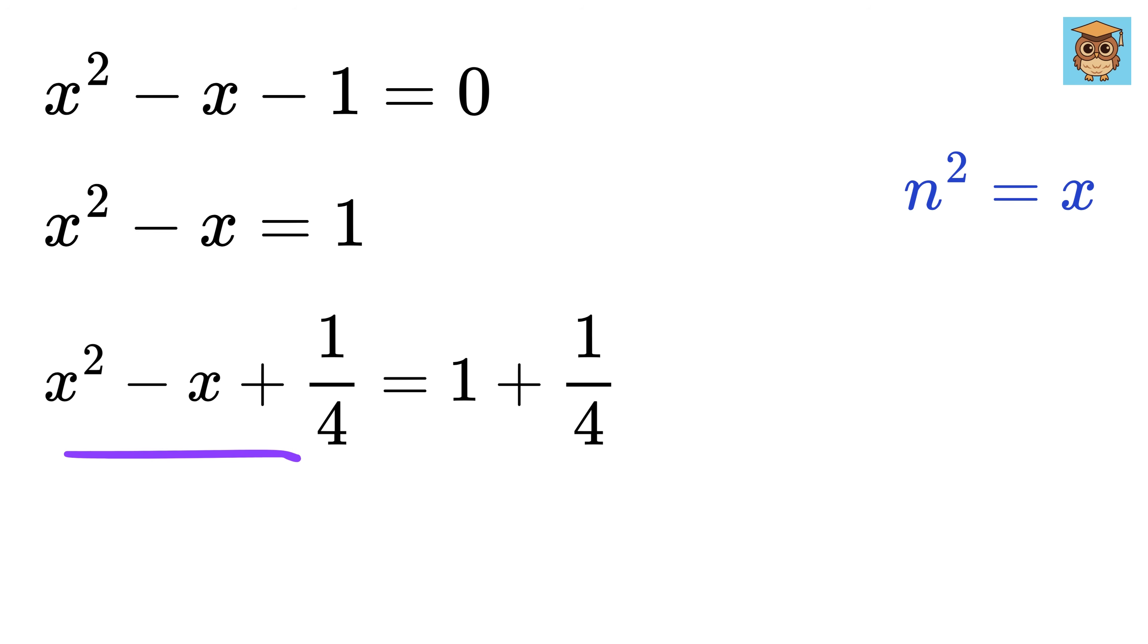Next, we will rewrite the left side as a perfect square. This is same as x minus half whole square, and the right side will be 5 by 4.